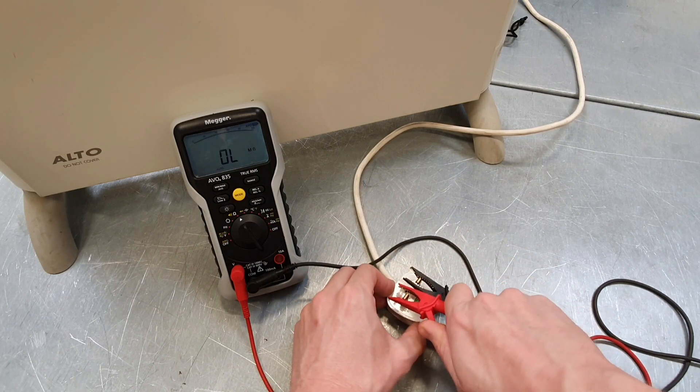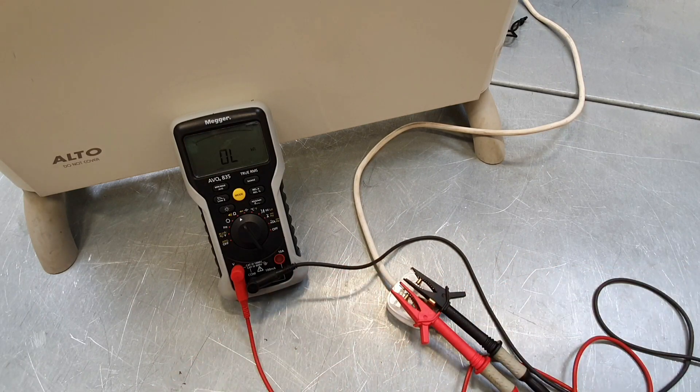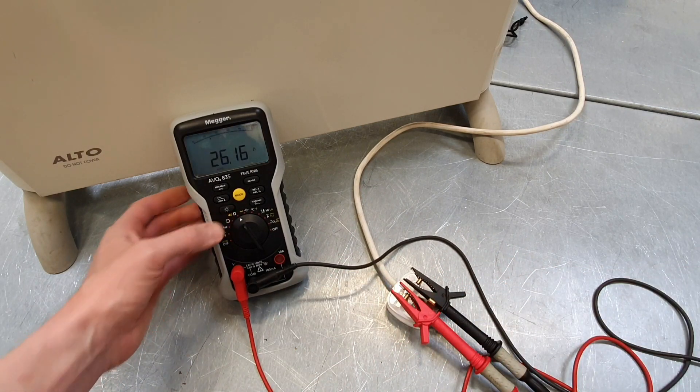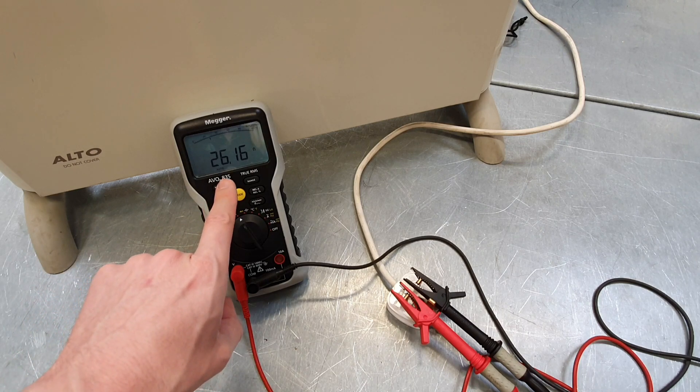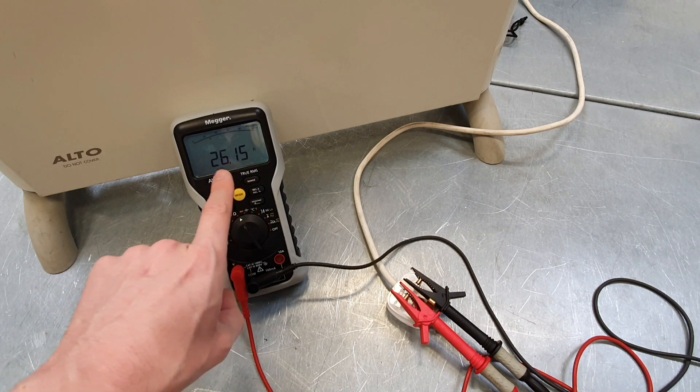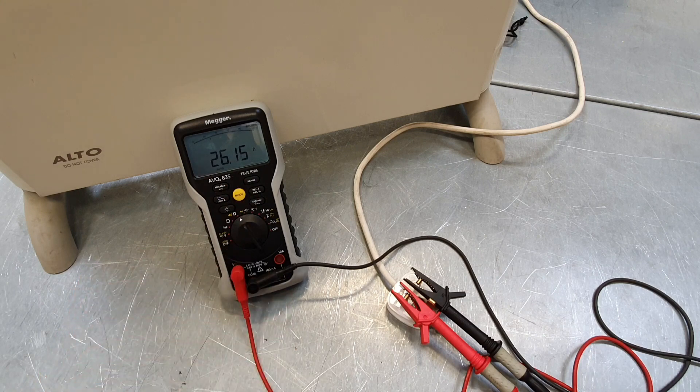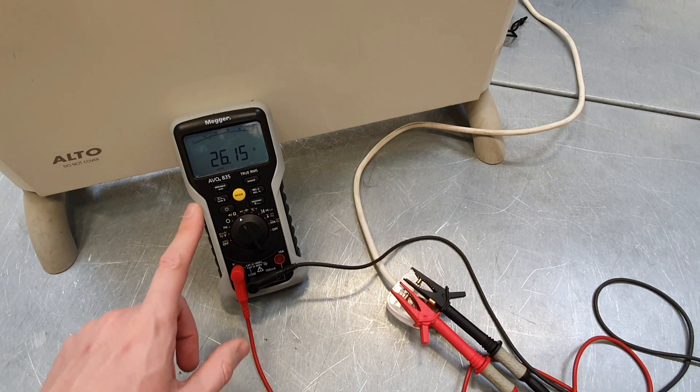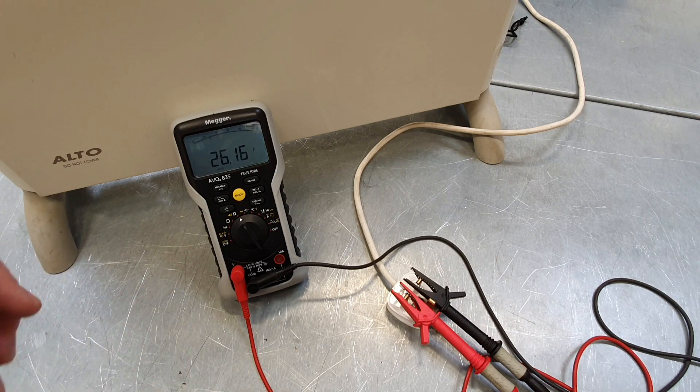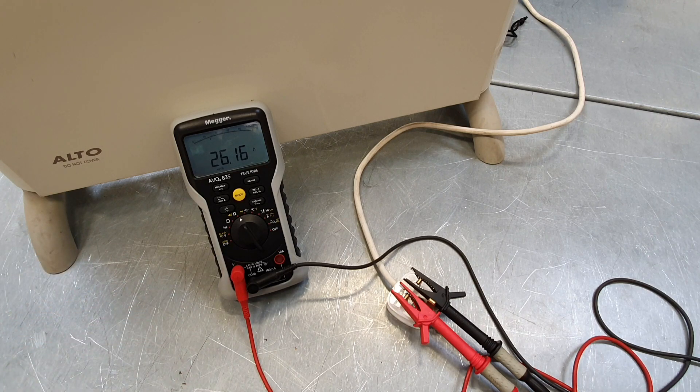So let's use our Mega Evo 835. We'll measure the resistance of the heating element here. So we'll clip that on there and we'll clip that on there. And when we measure that we see we're coming out with 26.16 ohms. So that's 26.16 ohms. It's hovering around out there. So let's take those numbers back up to the classroom and we'll have a look at whether that formula actually works or not.